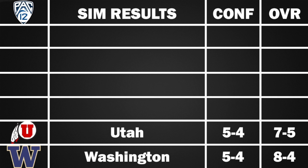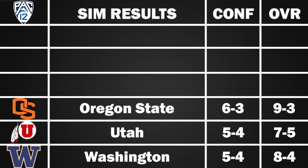Oregon State goes 9-3, 6-3 in conference — a little better than I expected. Wins over San Jose State, UC Davis, San Diego State, Washington State, Cal, UCLA, Arizona, Colorado, and Stanford. Losses came to Utah, Washington, and Oregon. A really good year for Oregon State.